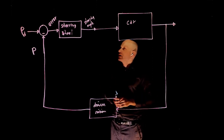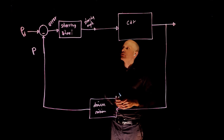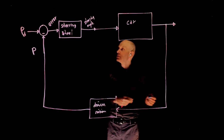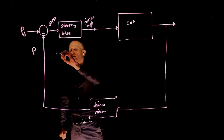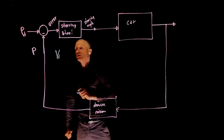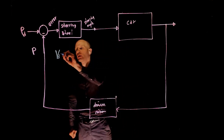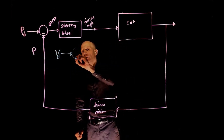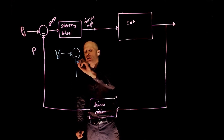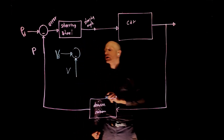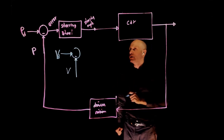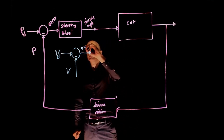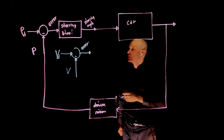Now let's complicate this problem a bit more and also add speed control. Following the same strategy, we want now to go along this path, but we also have a desired speed. So let's call VD a desired speed. If you want the car to follow this desired speed, we also need now the current speed of the car, which I'm going to call V. And this creates the error in terms of speed.